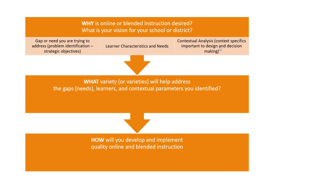Contextual analysis is also important — looking at what context specifics matter to the design and decision-making process. This could include what the actual infrastructure for online and internet access looks like for the learners you're aiming to serve. Would mobile learning solutions make more sense, or does this mean you need to advocate for expanded infrastructure? The contextual analysis is really important to figuring out what's going to be most effective and whether you'll really reach the learners you want to support.